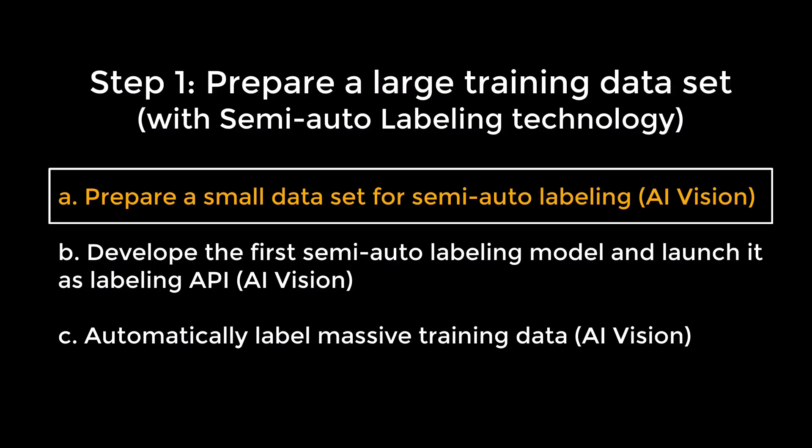In the first step, developers need to prepare a large training data set with labels. Usually, this step occupies more than 80% of human efforts in enterprise. AI Vision provides novel technology to significantly reduce the human efforts in this step. We call it semi-auto labeling.